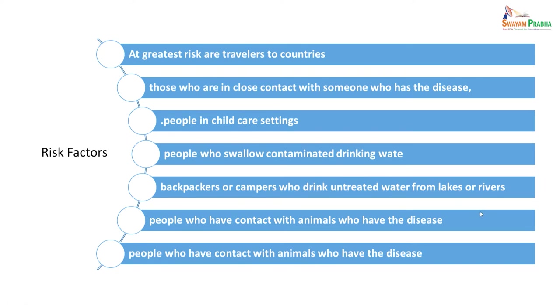The greatest risk is for travellers in endemic countries, those in close contact with an infected person, people in child care settings, those who swallow contaminated drinking water, backpackers or campers who drink untreated water from lakes or rivers, and people who have contact with infected animals.